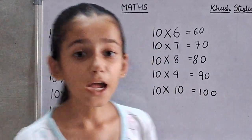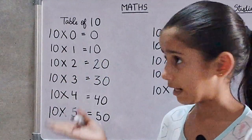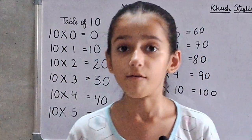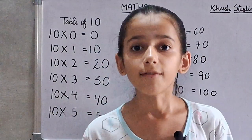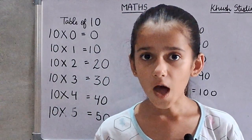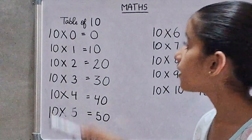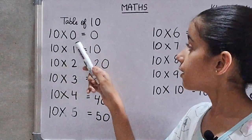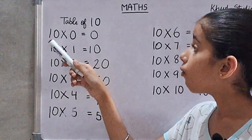I hope you understand the table of 10. Now we will learn the table of 10. Ten zeros are zero.